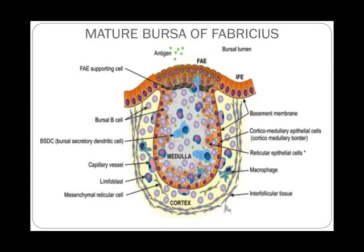In the diagram, the green structures represent antigens entering the Bursa. In the cortex region you have macrophages, and inside the medulla you have reticuloendothelial cells. The outer membrane separating the medulla and cortex is called the basement membrane. The cells inside the Bursa are called Bursal cells. There are also Bursal secretory dendritic cells, abbreviated as BSDC — remember this for objective questions. They are secretory in nature. You also have capillary vessels, lymphoblasts, and mesenchymal reticular cells in the structure.